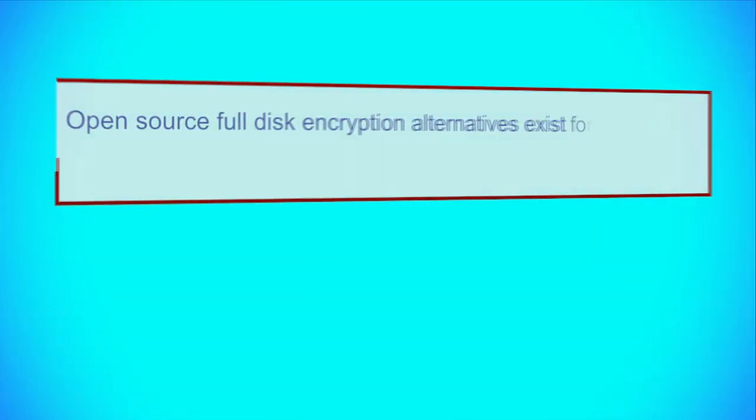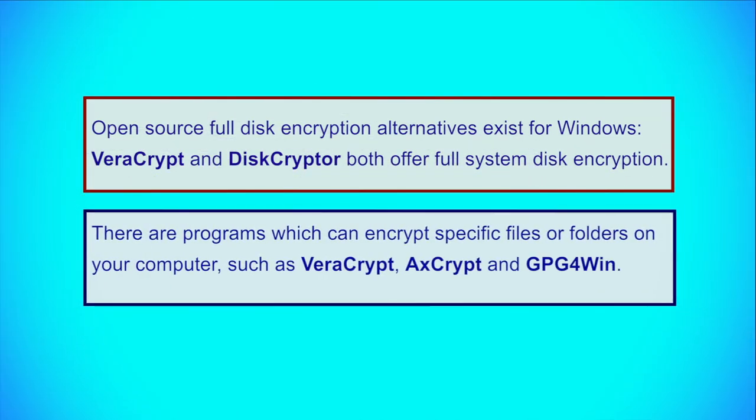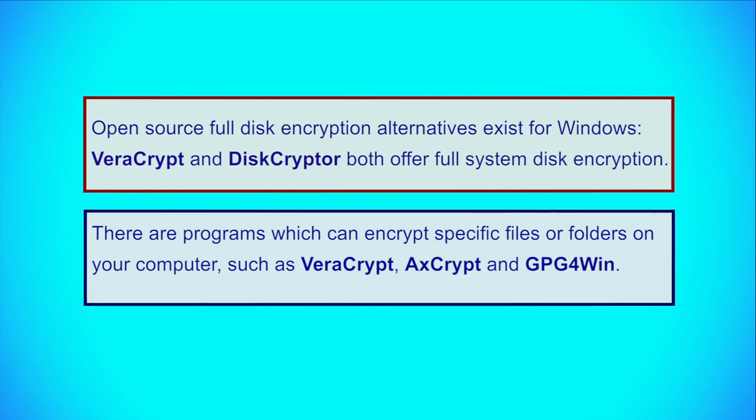Alternatives to BitLocker: Since BitLocker is a closed-source program, its security cannot be independently verified. Additionally, in some versions of Windows 10, Microsoft forces users to back up encryption recovery keys to a Microsoft online account, which may compromise the security of the key. Open-source full disk encryption alternatives exist for Windows, such as VeraCrypt and DiskCryptor, both offering full system disk encryption. There are also programs which can encrypt specific files or folders on your computer. I hope these tips are useful for you. Thank you very much.